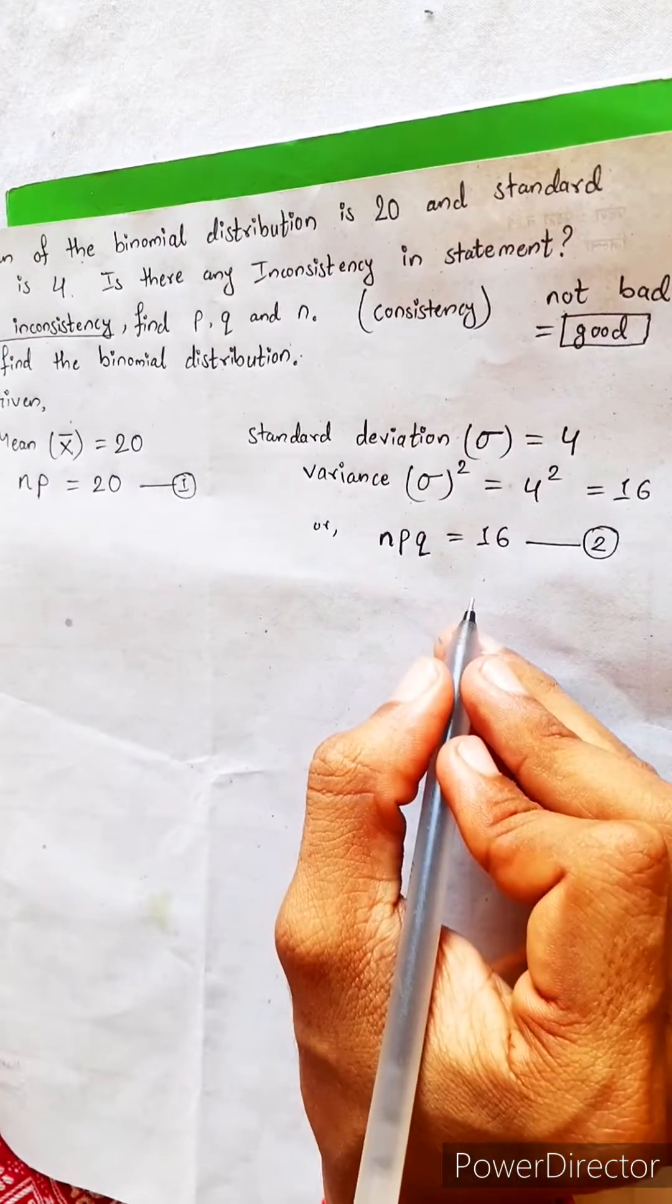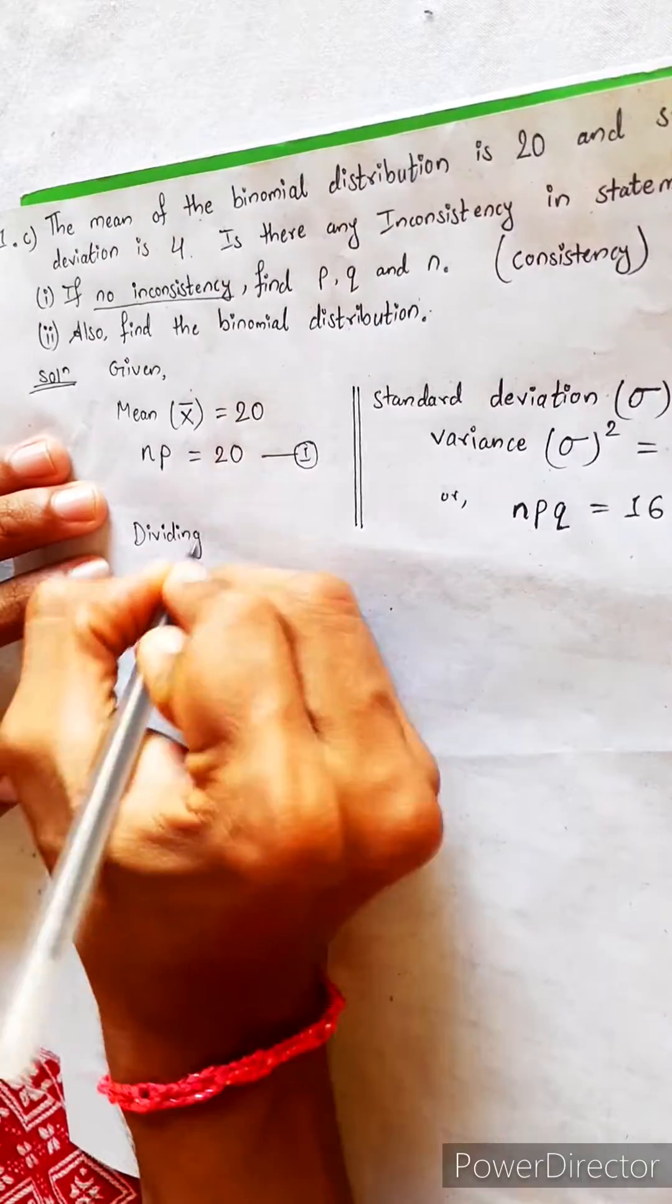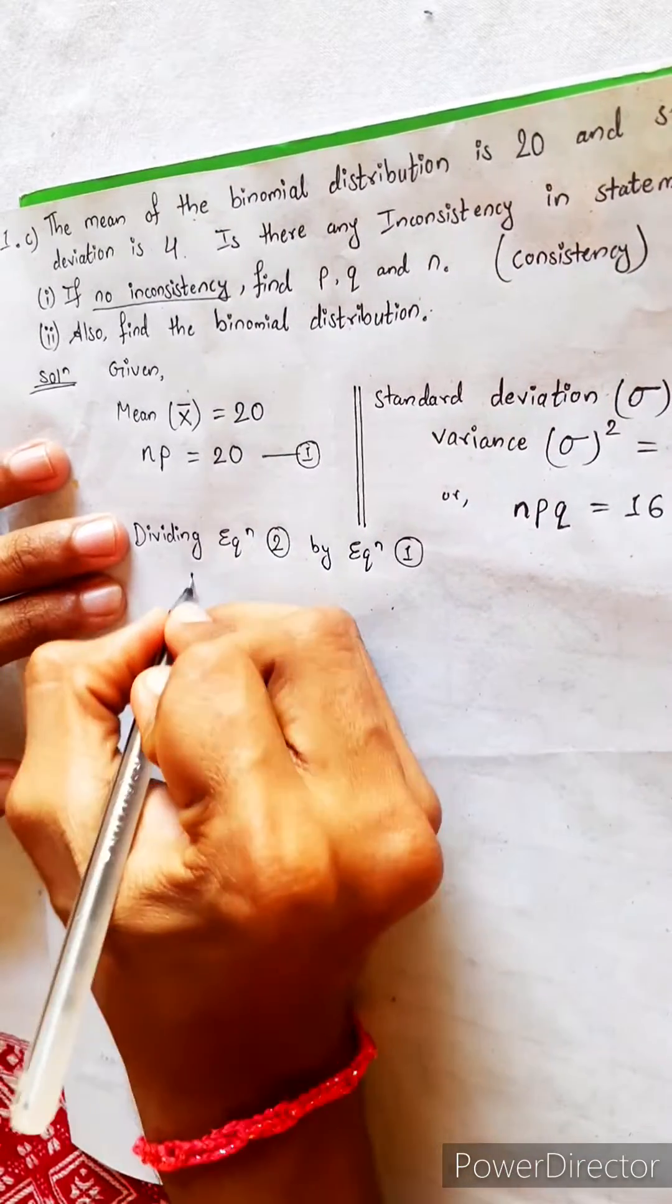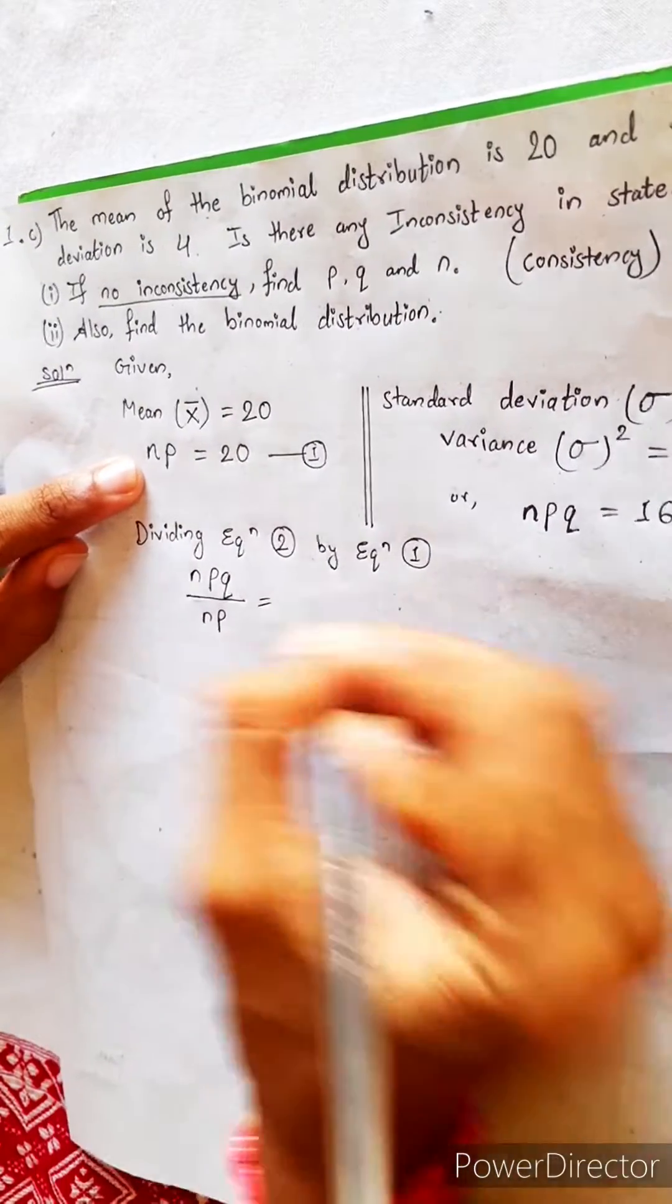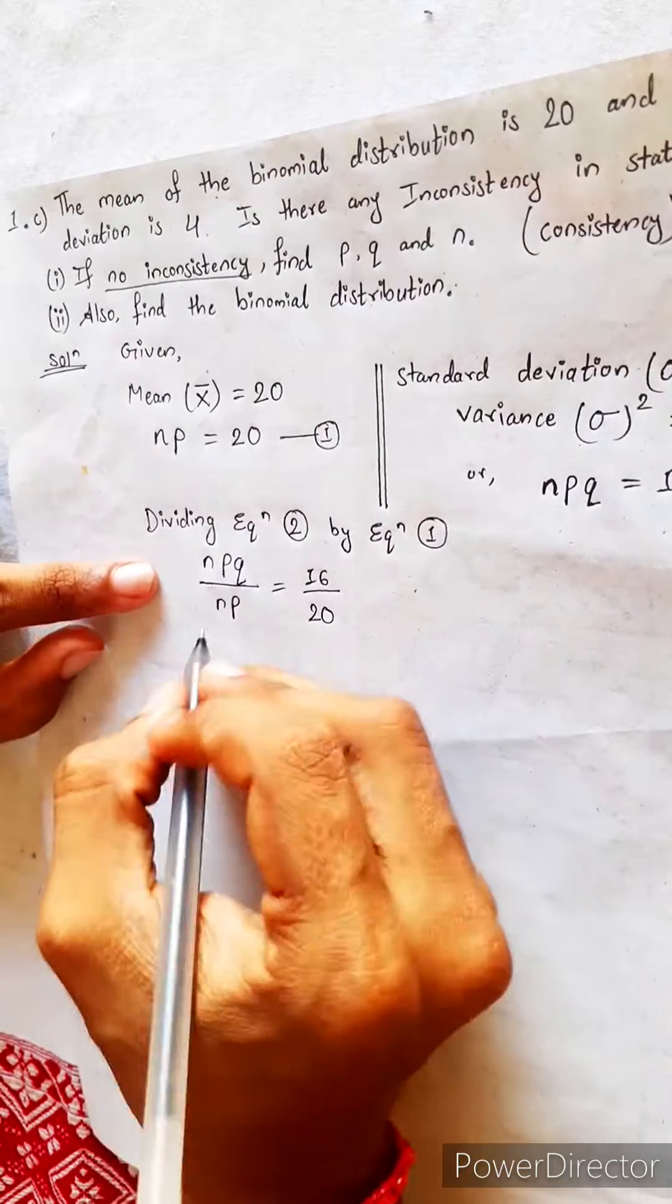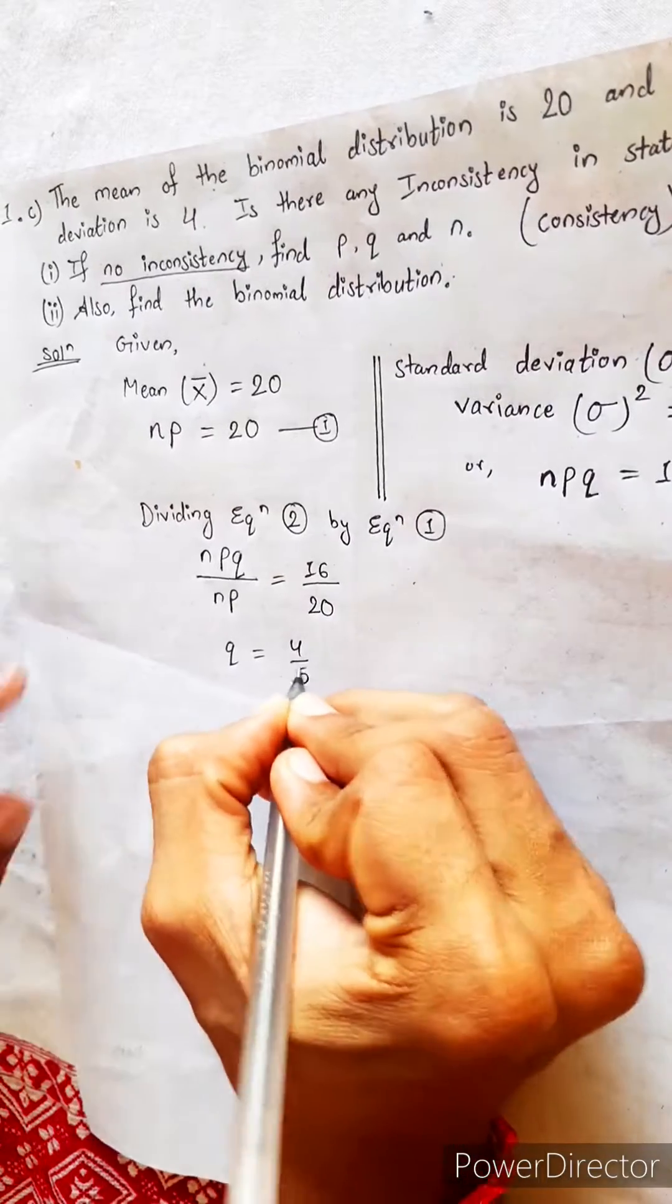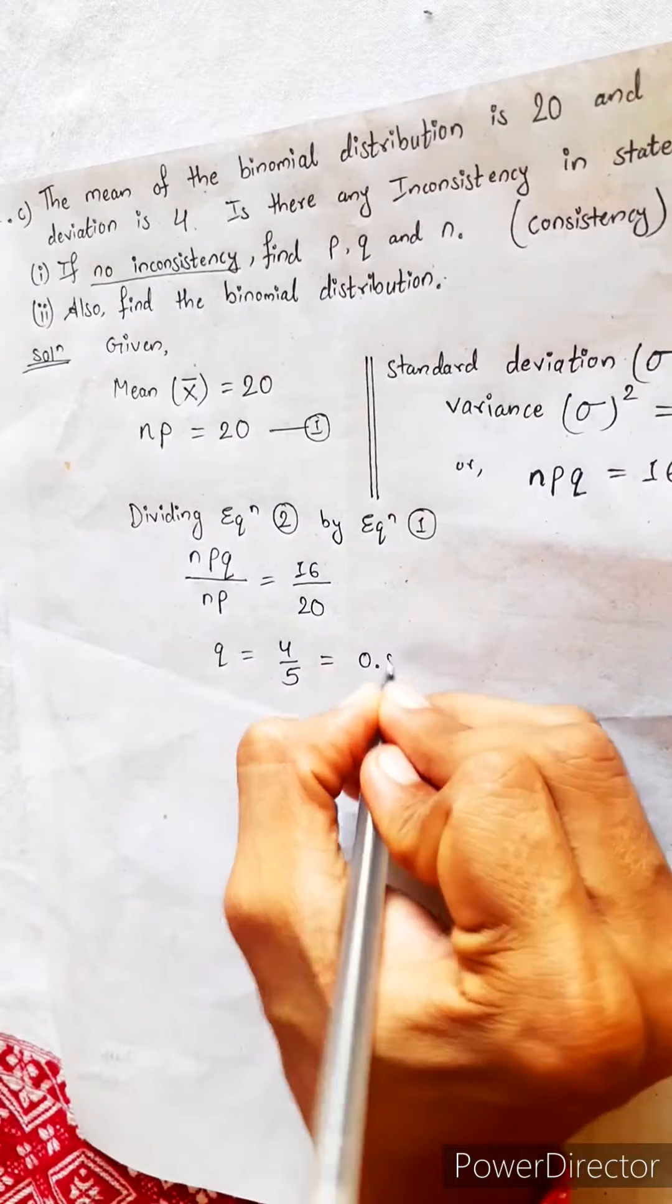Now, let's solve these two equations. But how to solve? Look here. Divide. Dividing equation 2 by equation 1. What will we get? NPQ divide by equation 1. Here is NP. Here this side 16. Here this side 20. Now, look. NP NP will be cancelled. Q equals to 4 by 5. This is 16 by 20. Yes, 4 by 5. Q equals to 4 by 5. How much is this 4 by 5? 0.8. This is 0.8.